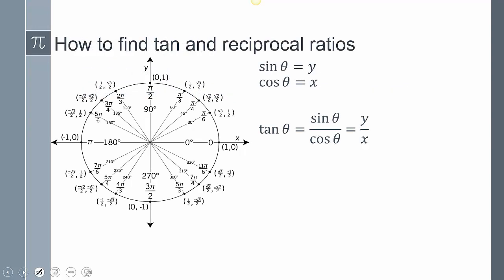Now remember, we said that sine relates to y, cosine relates to x, so therefore my tangent is sine over cosine, which is the same as y over x. So tangent is sine over cosine, or you take the y coordinate over the x coordinate.